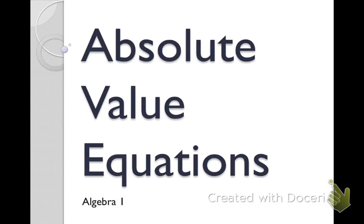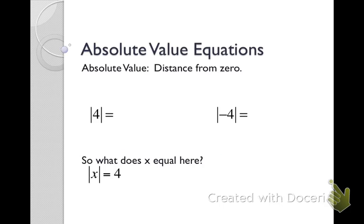Absolute value equations. We're going to start by defining what an absolute value is. Absolute value means the distance from zero. So if I take the absolute value of four, on a number line, four is four spots away from zero, so the absolute value of four is four.